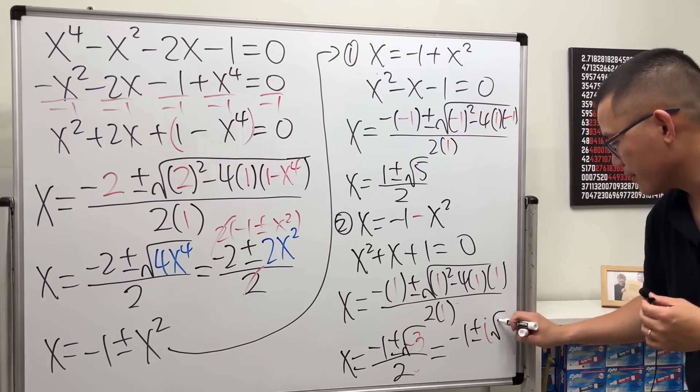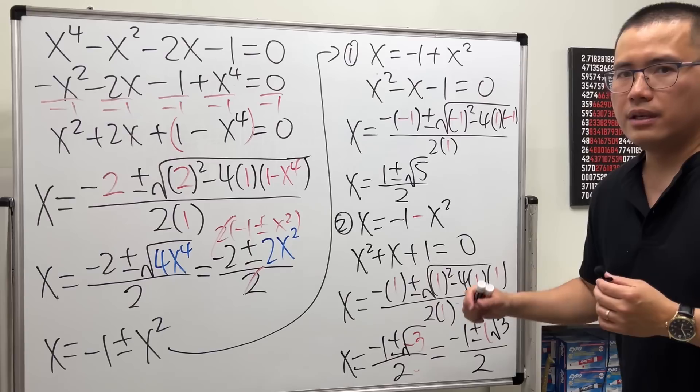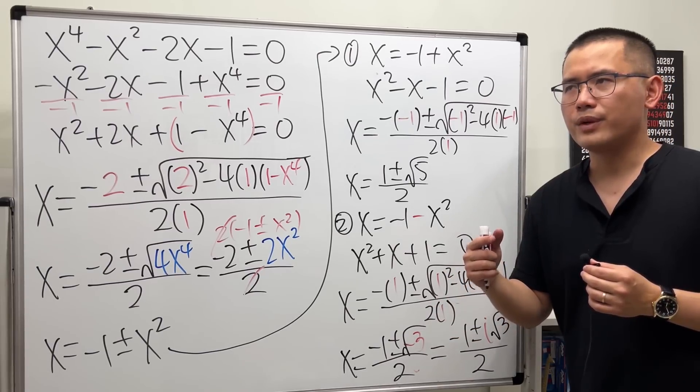Yeah, negative 3 square root over 2, and this right here we can get negative 1 plus or minus i square root of 3 over 2.